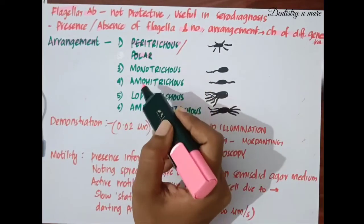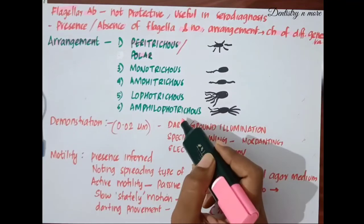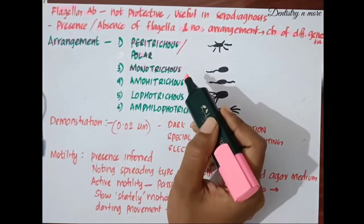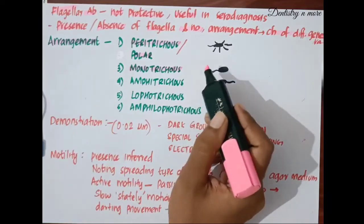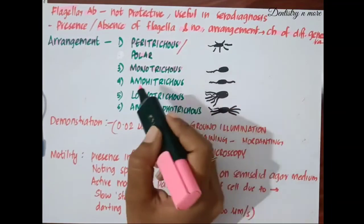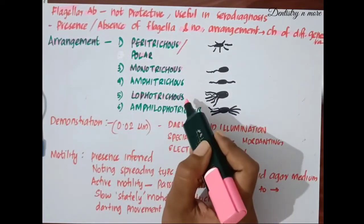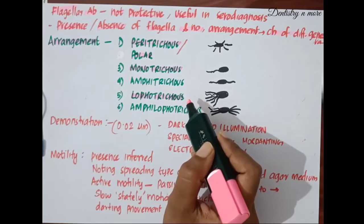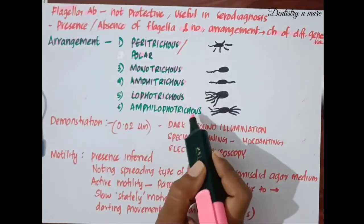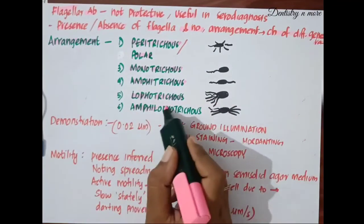In the polar type, we have monotrichous, amphitrichous, lophotrichous, and amphilophotrichous arrangements. In monotrichous type, the polar flagellum is single — for example, in cholera vibrio. The flagella may be present in tufts as in lophotrichous. In amphitrichous, flagella are present at both poles. In amphilophotrichous, tufts of flagella are present at both ends.